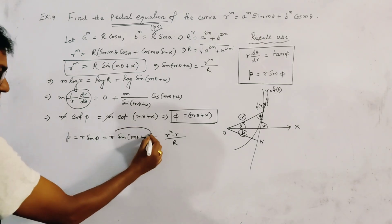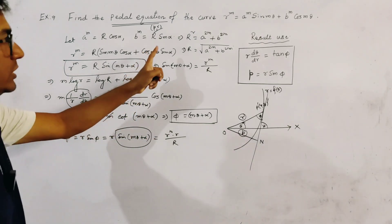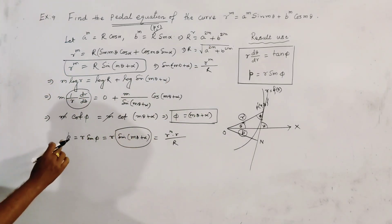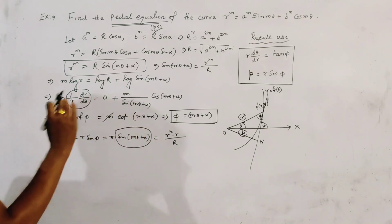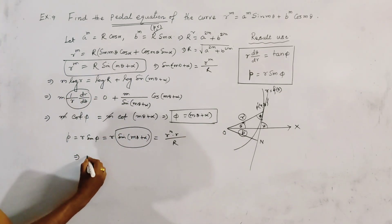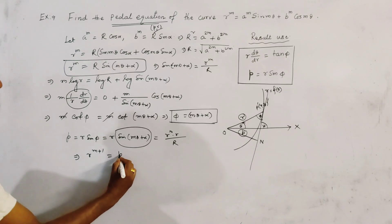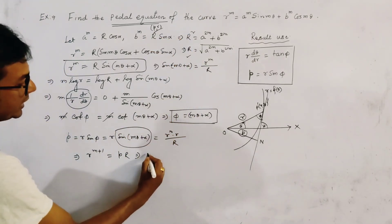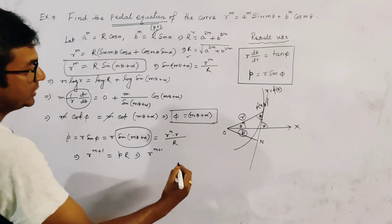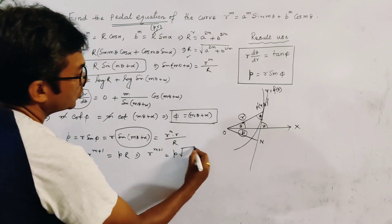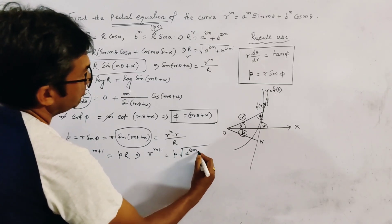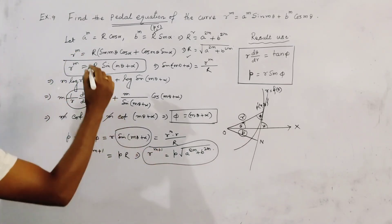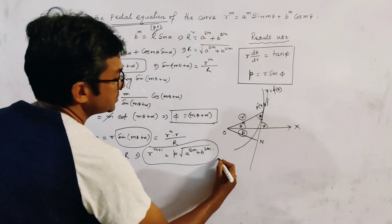We substitute sin(mθ + α) in terms of r because we have to eliminate θ and get the relation between p and small r. So the equation becomes r^(m+1) = p·R, and substituting the value of R, we get r^(m+1) = p·√(a^(2m) + b^(2m)). This is the pedal equation of the given polar curve.